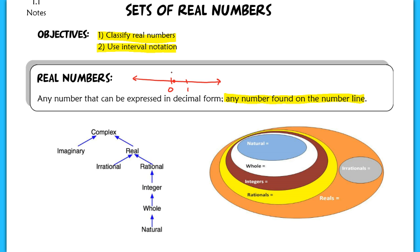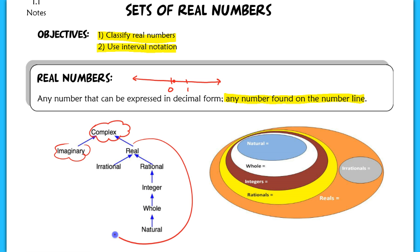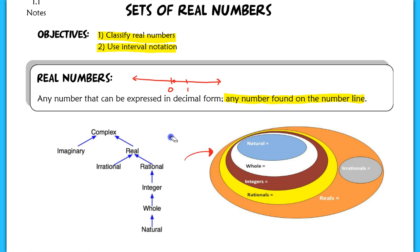Here we've got two different representations with diagrams to show you the classifications of real numbers. On the right diagram, we don't have complex and imaginary — we're only focusing on real. So this diagram here of real numbers is in more detail. We've got complex numbers, which can be broken down into an imaginary part and a real part. In this particular section, we're going to be focusing on sets of real numbers.